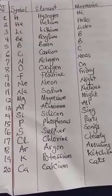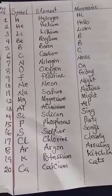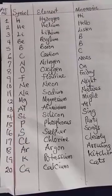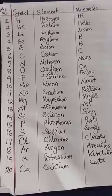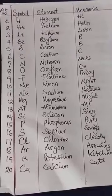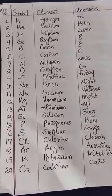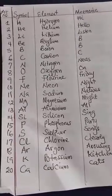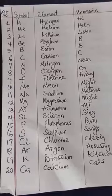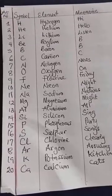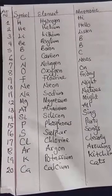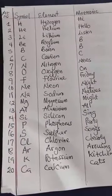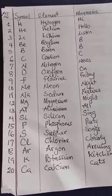The element hydrogen is represented by symbol H, capital letter H. Helium by He, lithium by Li, beryllium by Be, boron by B, carbon by C, nitrogen by N, oxygen is represented by symbol O, fluorine by alphabet F, neon by Ne.